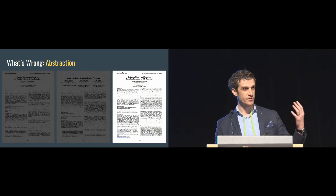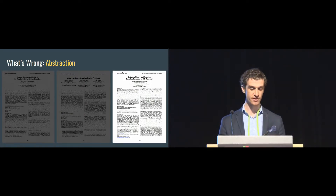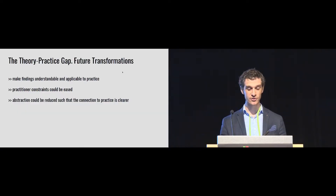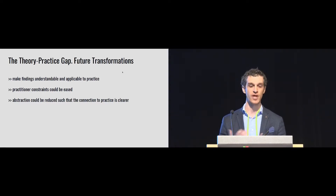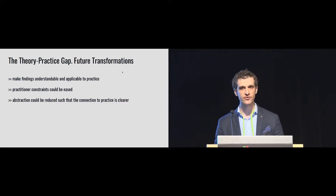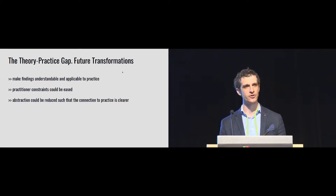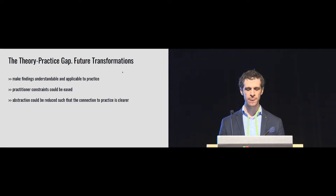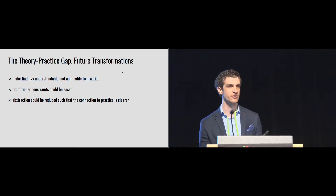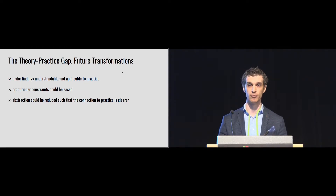Just as descriptions of reality point towards future transformations in the case of the paintbrush pump, so too do they here. If communication is the problem, we can propose frameworks for scholarly writing to make findings more understandable and applicable to practitioners. If practitioner constraints are the issue, we can study practice and propose ways to ease them. And if abstraction is the problem, we can reduce abstraction and produce different kinds of knowledge so the connection between theory and practice is clearer. You can see evidence of that in intermediate-level knowledge objects like strong concepts, conceptual constructs, and bridging concepts.